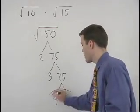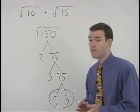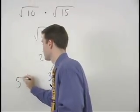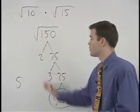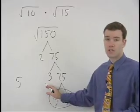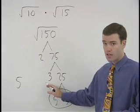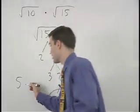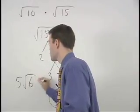Since we have a pair of 5's, a 5 will come out of the radical. The 2 and 3 that are left over will stay inside the radical, multiplying together to make 6. So we have 5 root 6.